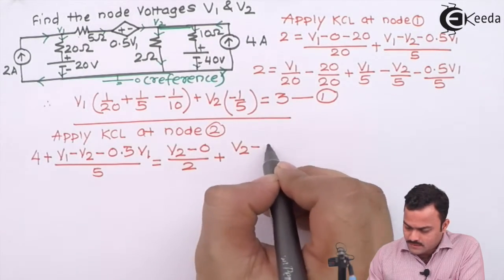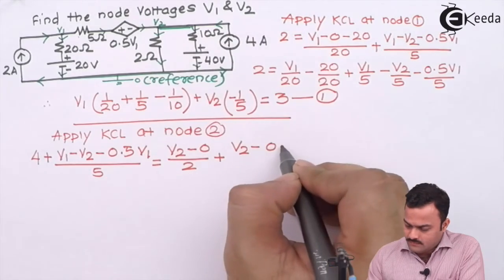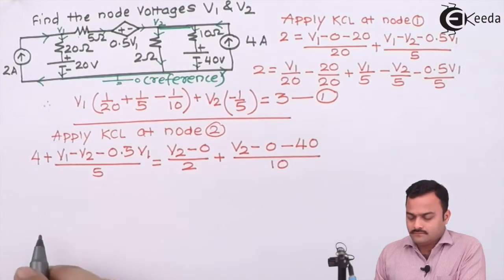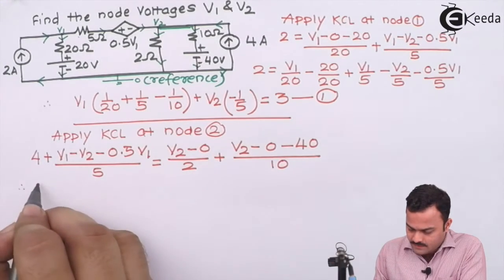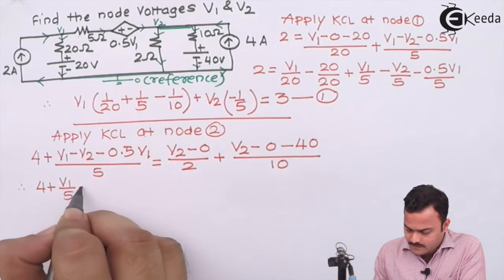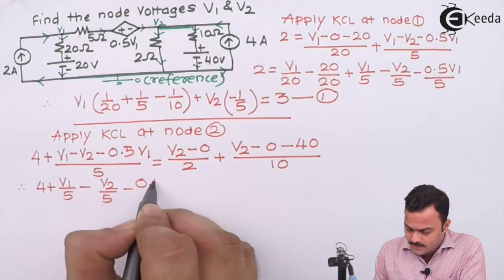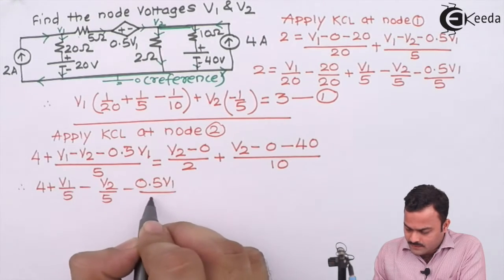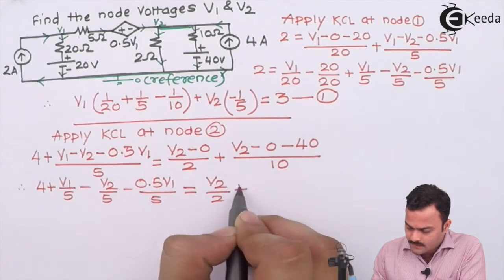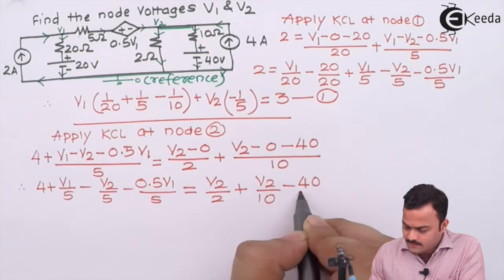And outgoing currents are V2 minus 0 divided by 2, plus V2 minus 0. In the current direction voltage is dropping, so minus 40, divided by resistance which is 10. So upon simplifying: 4 plus V1 divided by 5 minus V2 divided by 5 minus 0.5 V1 divided by 5 equals V2 by 2 plus V2 by 10 minus 40 by 10.